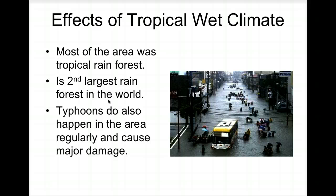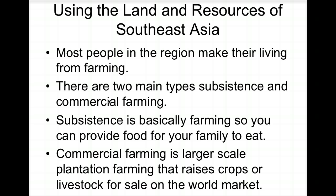Monsoons have a major impact on the region. The tropical climate means most of the area was originally tropical rainforest — it's the second largest rainforest in the world after the Amazon. Typhoons also occur in the area and unfortunately cause damage.